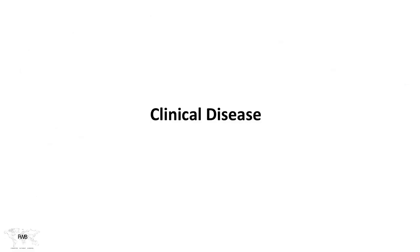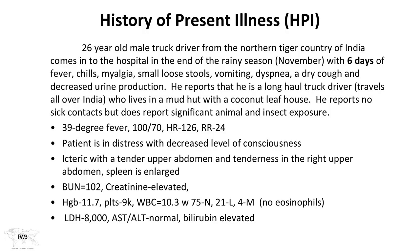Dr. Daniel Griffin presents a clinical vignette: a 26-year-old male truck driver from northern India presenting in November at the end of the rainy season with six days of fever, chills, myalgia, loose stools, vomiting, dyspnea, dry cough, and decreased urine production. He travels all over India, lives in a mud hut with a coconut leaf roof, and reports significant animal and insect exposure.